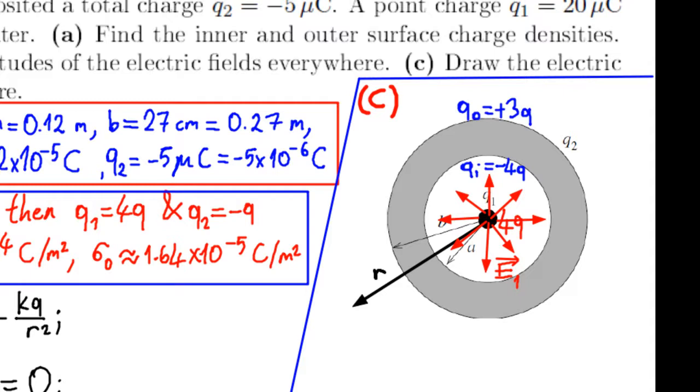In the second region, that is inside the spherical shell, there are no electric field lines.